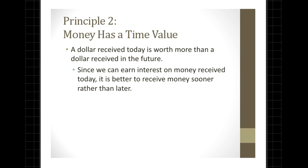The second principle is to recognize that money has a time value. The typical example is that one dollar received today is worth more than a dollar received in the future. Let me draw a timeline — consider this line as the timeline T, with today on one end versus one year from today on the other. Why would one dollar received today be worth more than a dollar received in the future? The logic is pretty simple.